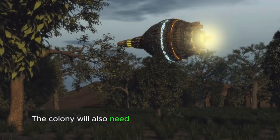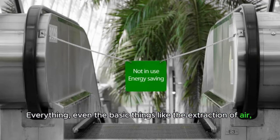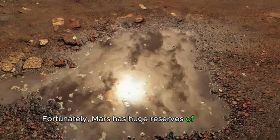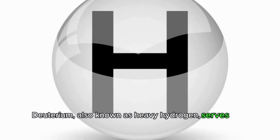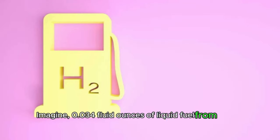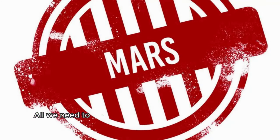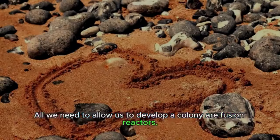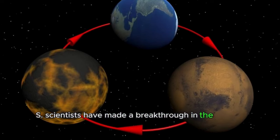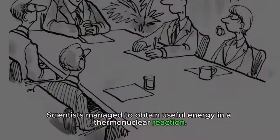The colony will also need a source of electricity to exist. Everything, even the basic things like the extraction of air, water, and food, will need electricity to function. Fortunately, Mars has huge reserves of deuterium. Deuterium, also known as heavy hydrogen, serves as a fuel for thermonuclear reactions. Imagine, 0.034 fluid ounces of liquid fuel from heavy hydrogen can produce as much energy as 20 tons of coal. All we need to allow us to develop a colony are fusion reactors. Speaking of those reactors, quite recently, U.S. scientists have made a breakthrough in the field of thermonuclear energy. Scientists managed to obtain useful energy in a thermonuclear reaction. But the question remains, can this colony be self-sufficient?